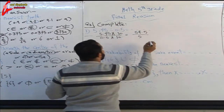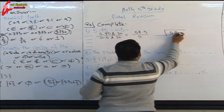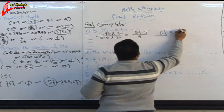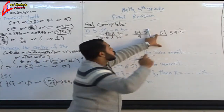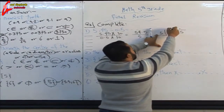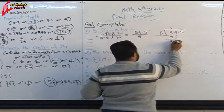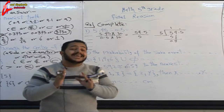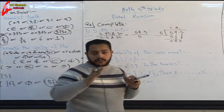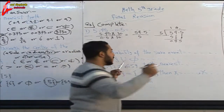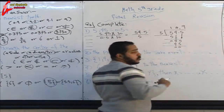Now use long division: 54.5 divided by 5. Write the decimal point up in the quotient. The divisor has one digit: 5 divided by 5 equals 1. 1 times 5 is 5, subtract to get 0. Drop 4 — 4 is less than 5, so write 0 and drop the next digit. Now 45 divided by 5 equals 9. 9 times 5 is 45, remainder is zero. Our quotient is 10.9.